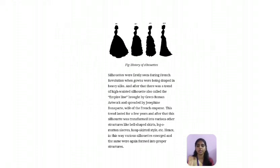Silhouette was first seen during the French Revolution, when gowns were draped in heavy silks. After that, there was a trend of high-waisted silhouette, also called the empire line, drawn from Greco-Roman artwork and associated with the wife of the French Empire. This style paused for a few years, and after that the silhouette transformed into various structures like the bell-shaped skirt, leg-of-mutton sleeve, hoop skirt style, etc. In this way, various silhouettes emerged and were again formed into proper structures.